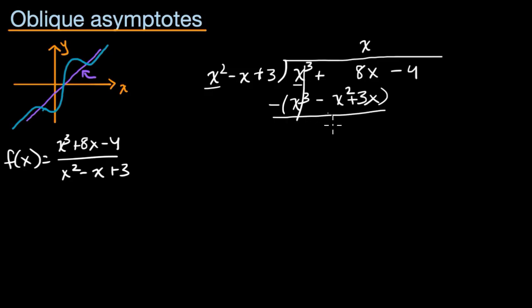And then we're going to want to subtract that. That goes away. You're left with negative of a negative is a positive. Positive x squared, 8x minus 3x is 5x. And then you have minus 4.